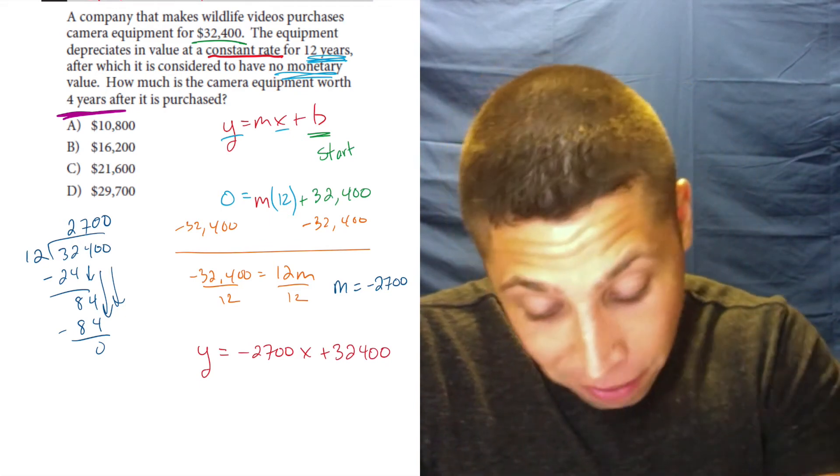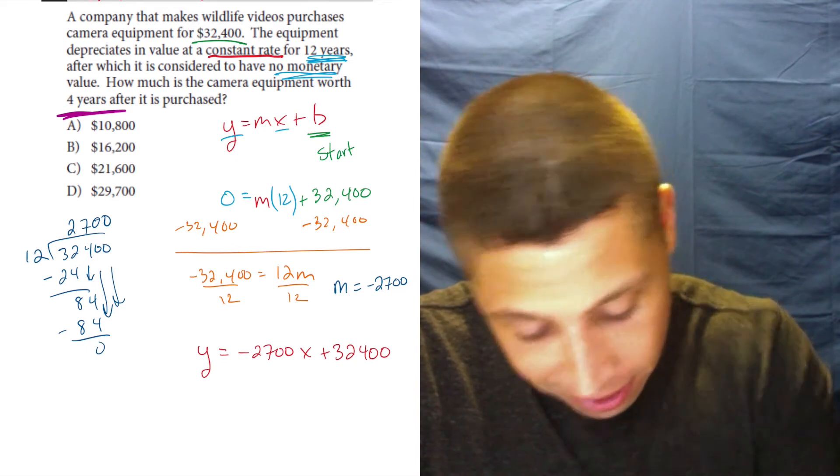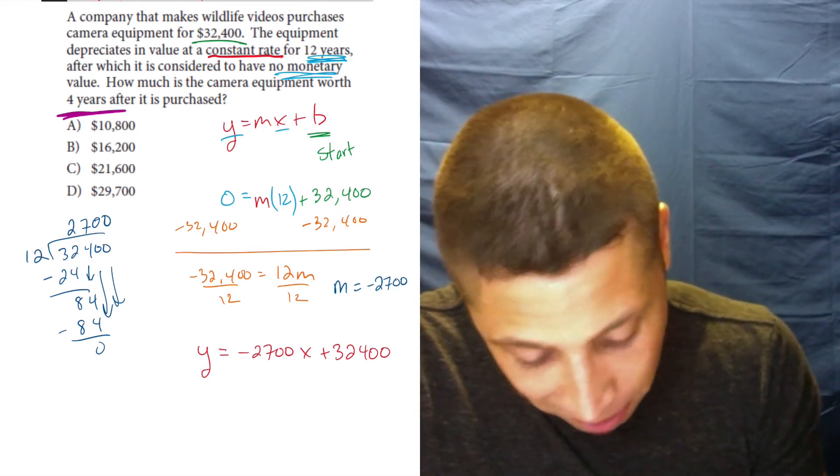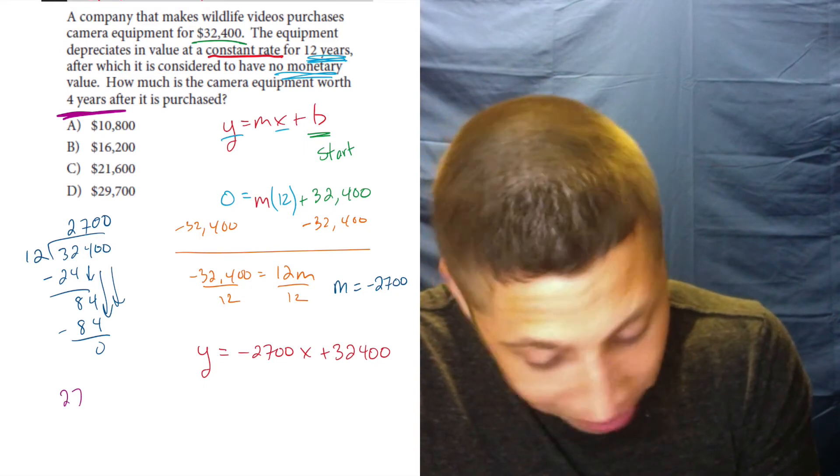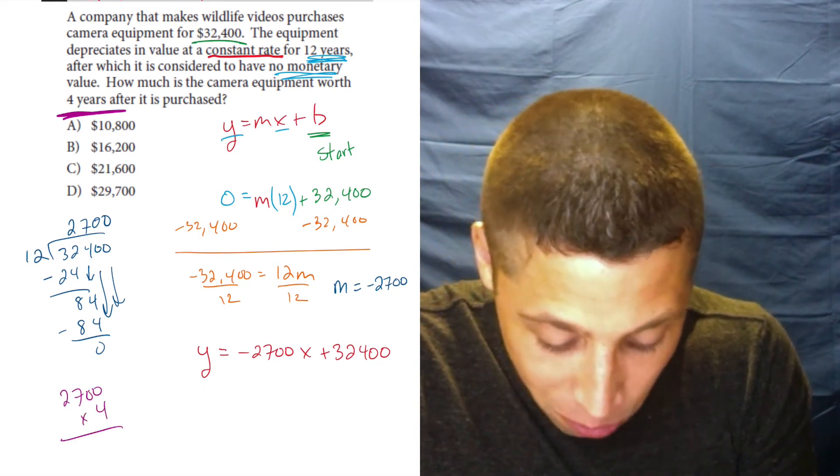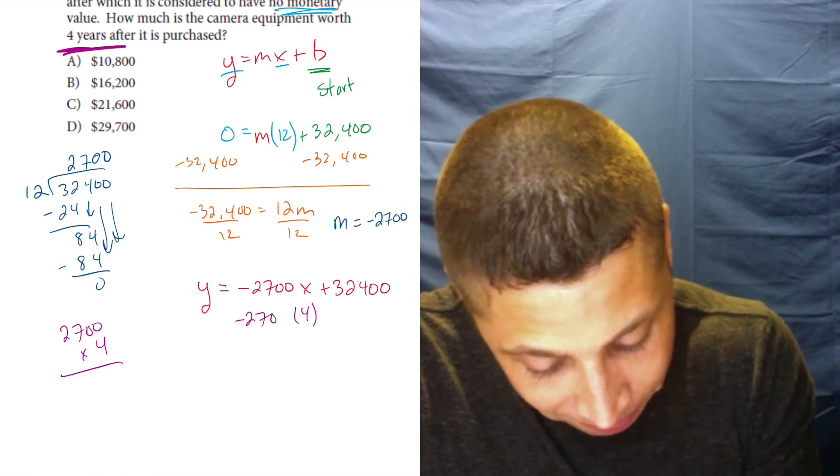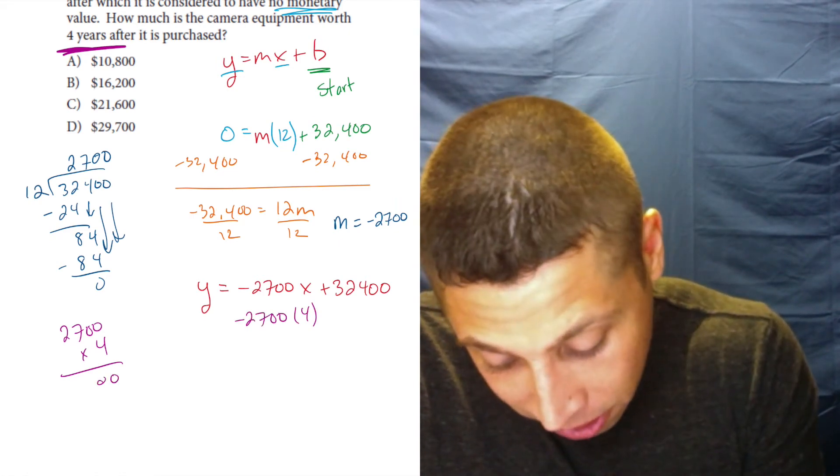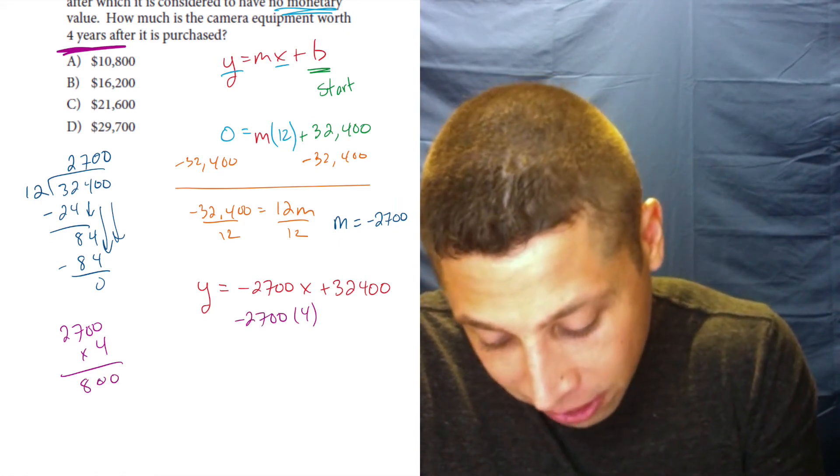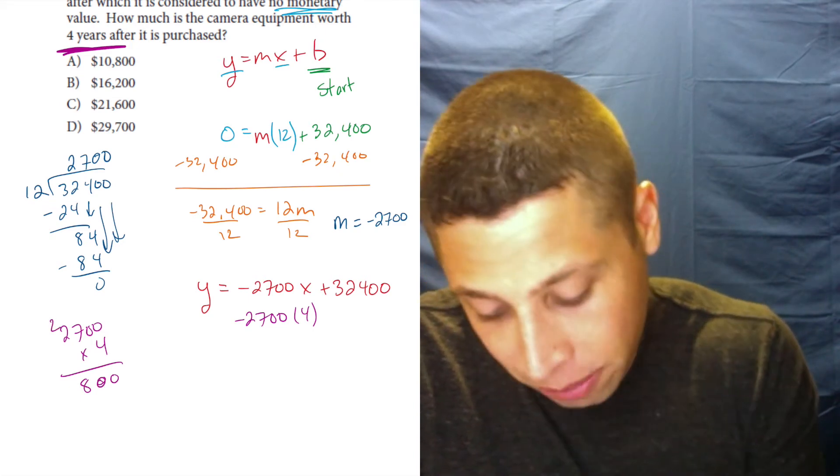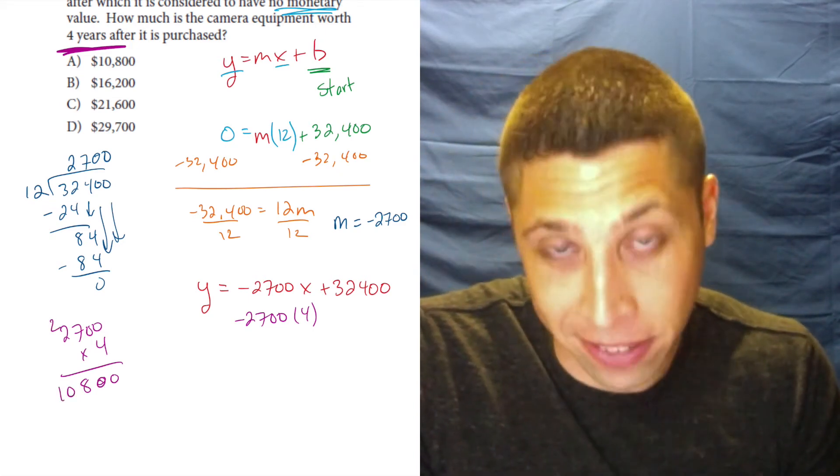It's y is equal to negative 2,700x plus 32,400. Now we can plug that four in for x. And that means we're still going to need to do some annoying math. 2,700 times four. Four times zero is zero. Four times zero is zero. Four times seven is 28. Four times two is eight. Nine, ten. 10,800.